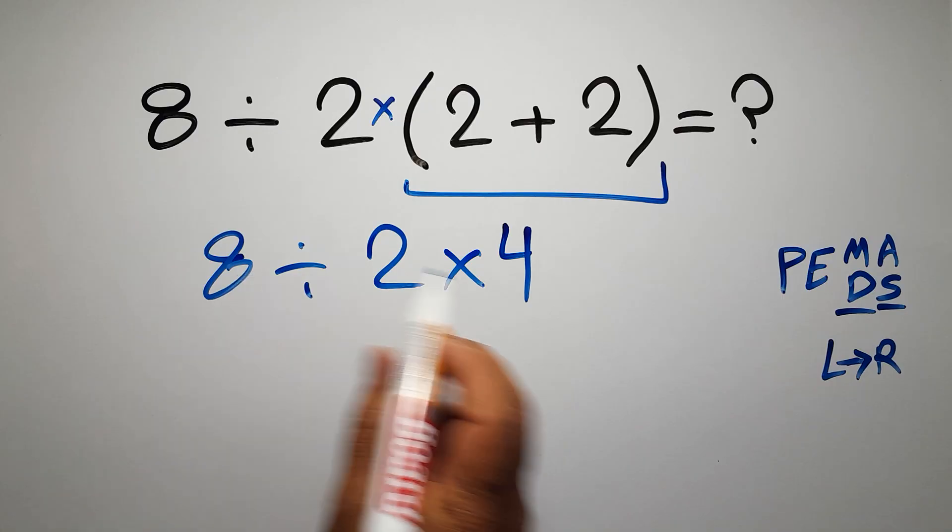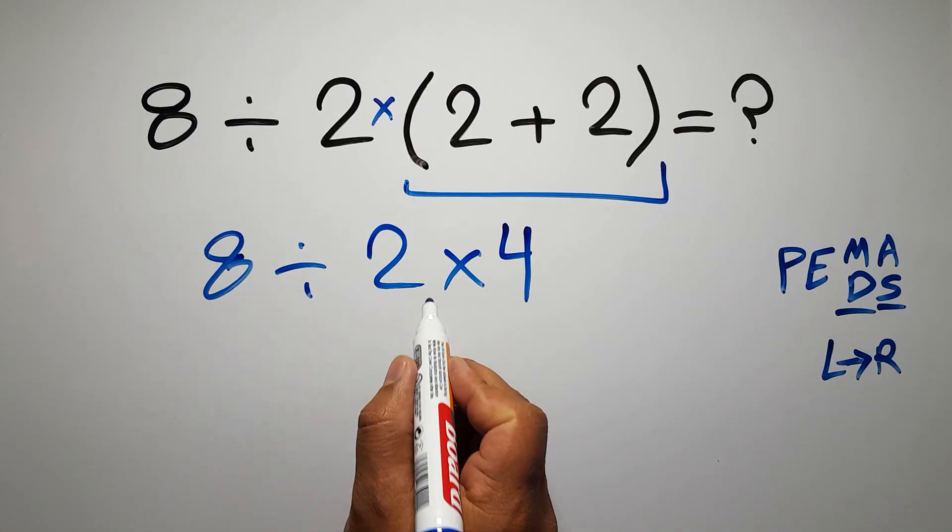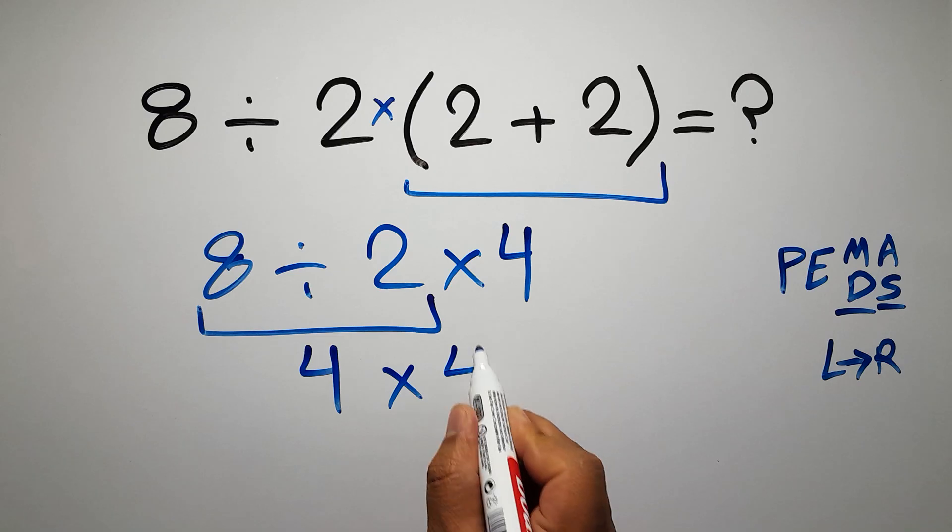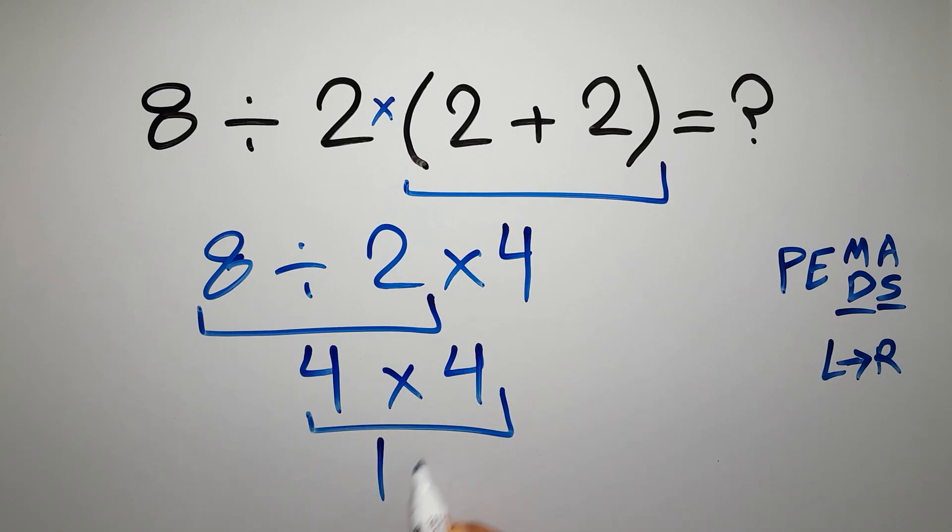Now we have to work from left to right. 8 divided by 2 gives us 4, and 4 times 4 is just 16. This is our final answer to this problem.